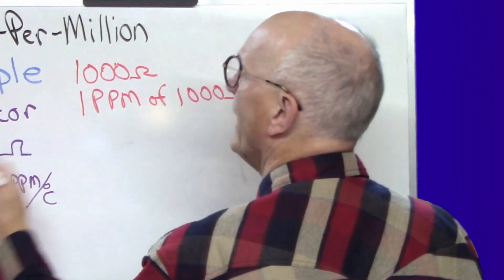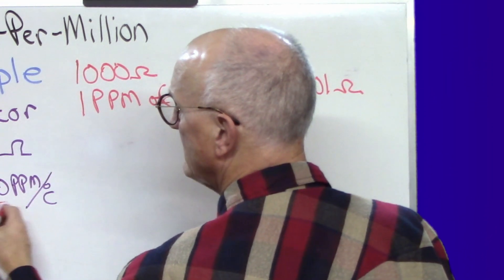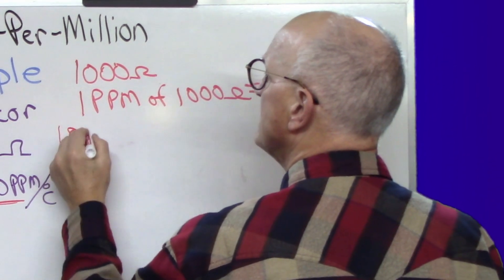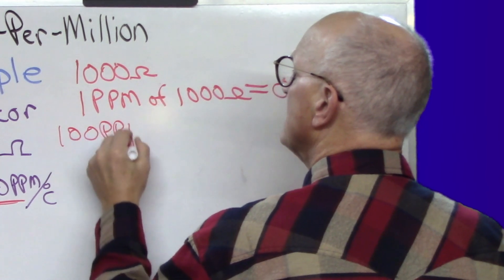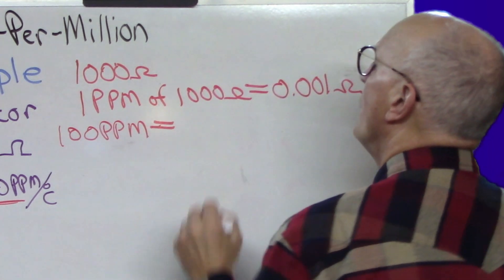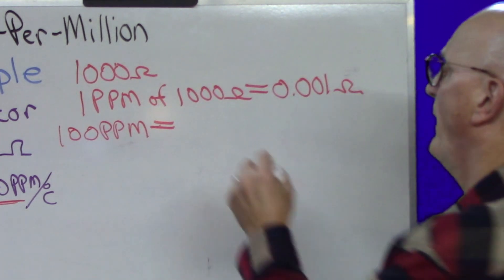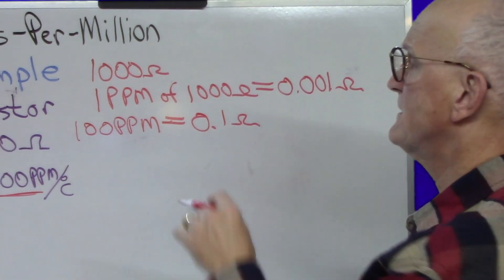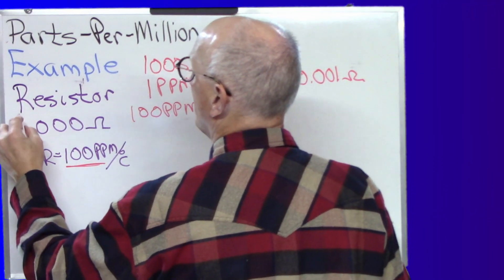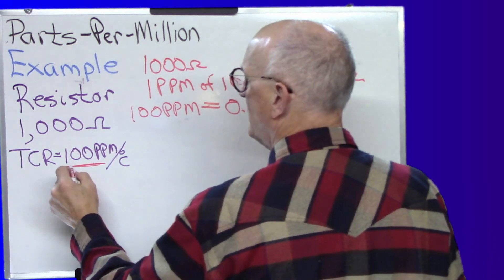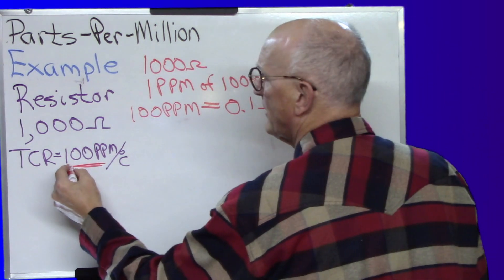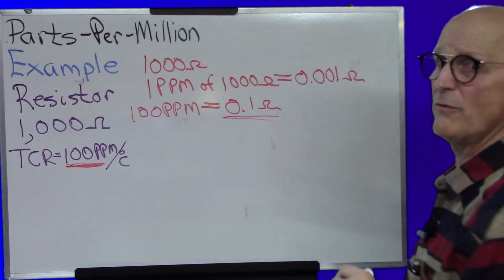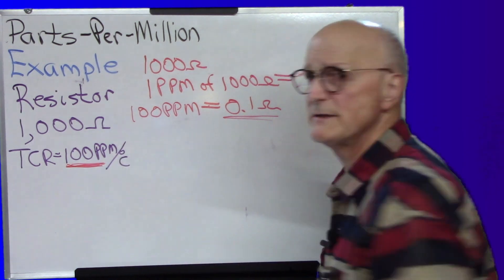1,000 ohms. So 100 parts per million, this guy right here is 100 times this would be 0.1 ohms. Okay, so that's the first part of the equation. We have our 1,000 ohms. We have our 1,000 ohm resistor. We have 100 parts per million. And this 100 parts per million gives us 0.1 ohms. But notice it says per degrees Celsius.